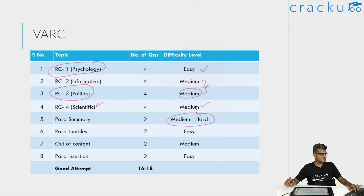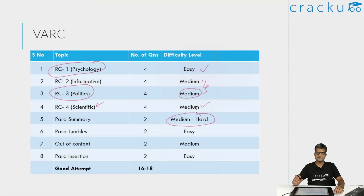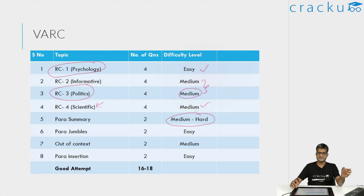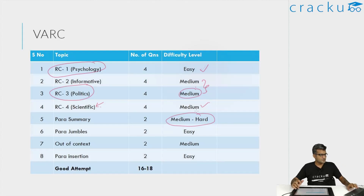For para jumbles, I think there were two questions. Both of them were fairly straightforward. If you focus, you can easily find the para jumbles — I try to find which sentence comes after the other sentence. In both the questions in para jumbles, I was able to find those connections easily and got both questions correct.